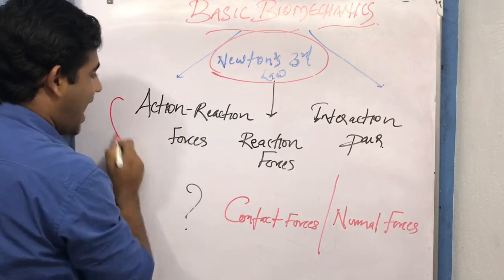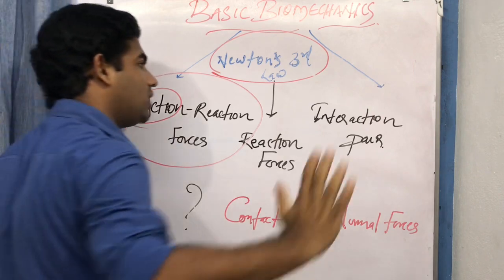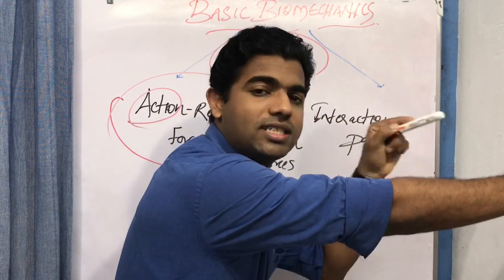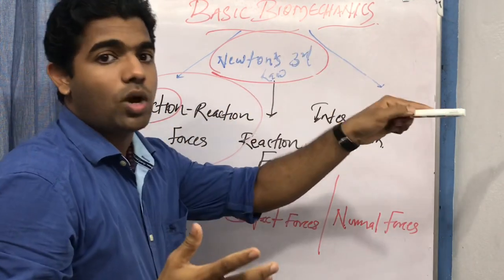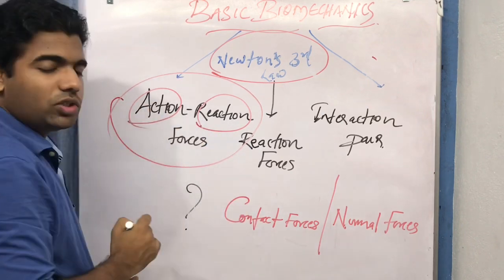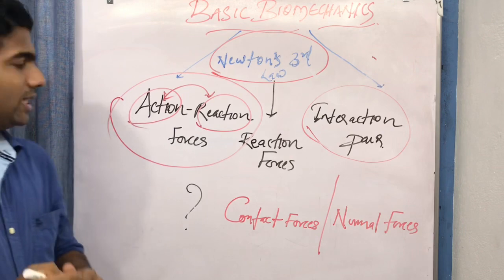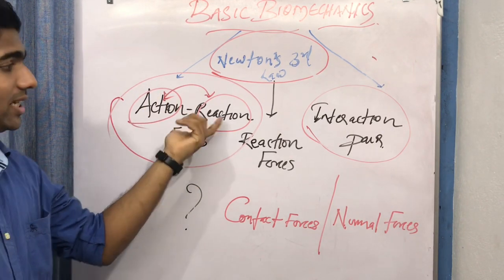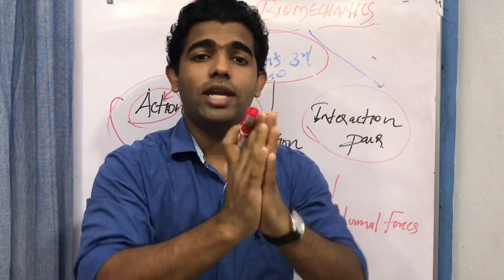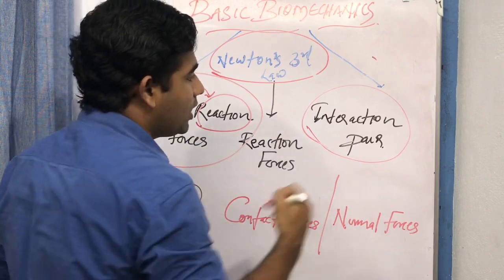These forces are known as action-reaction pair or action-reaction forces. The action is my hand pushing on the board; if I don't push on the wall, the wall won't exert a force back on me. So the wall exerting force back on me is the reaction. They are also called the interaction pair because they act as paired forces — they arise only because of the contact and interaction between the two objects.